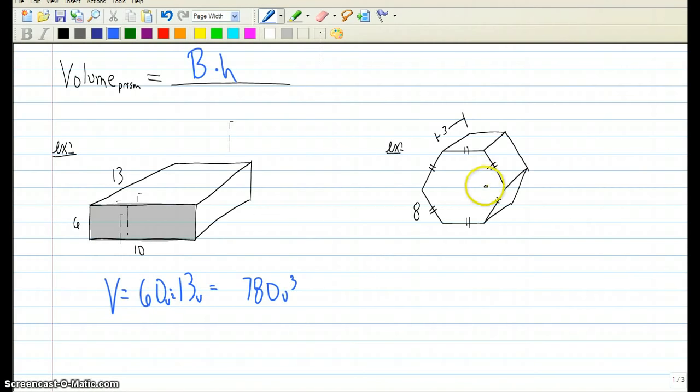The next shape we have is a hexagonal prism. We want to find the volume of this shape. So once again, it's the area of the base. Regular hexagons are nice because we can just do s squared root 3 over 4. That would give us the area of one of these regular triangles, but there's 6 of them.